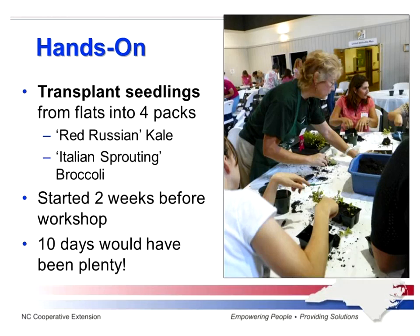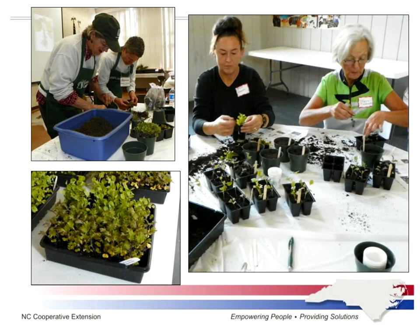Our second hands-on activity was transplanting seedlings. Everybody loved this. Some people were so hesitant to touch those seedlings to start with, but once they did one, they just wanted to do packs and packs and packs. I had started seedlings at my house — red Russian kale and Italian sprouting broccoli. The great thing about doing this in the fall is you don't need a greenhouse because you don't need any additional heat. I started two weeks before, but those seedlings were a little bit on the large side. I would recommend starting seedlings 10 days before the workshop.